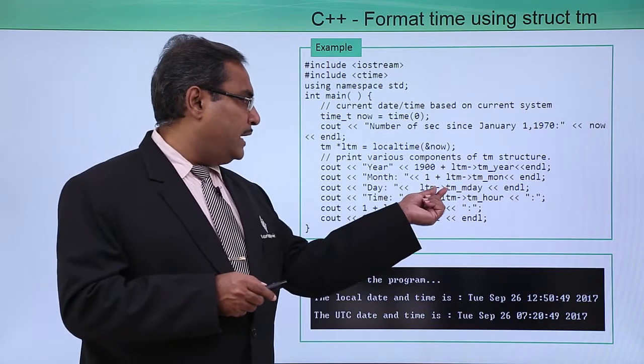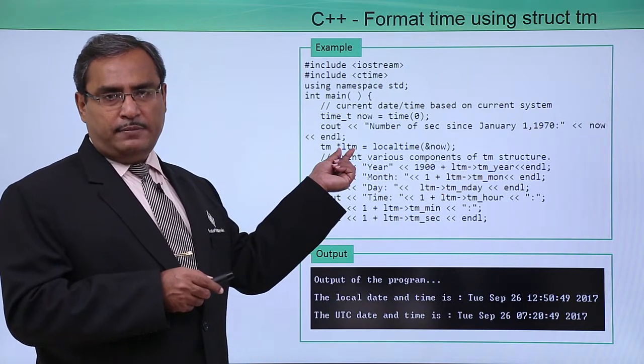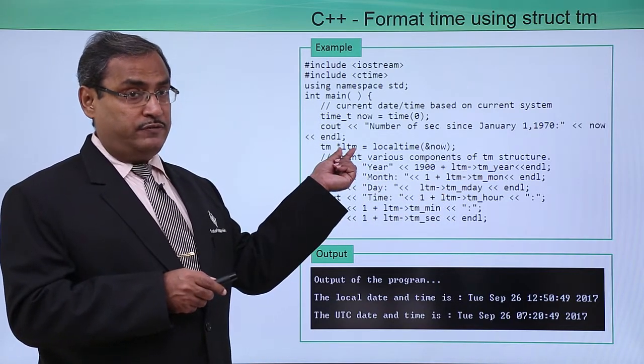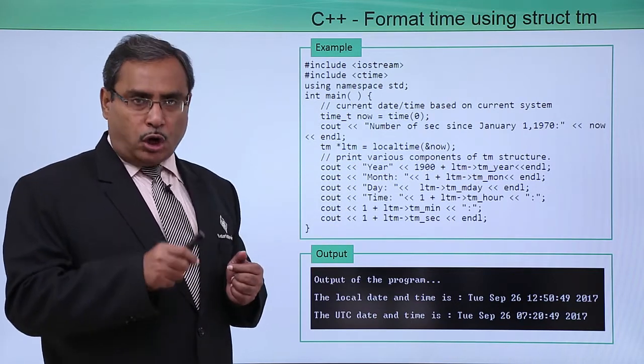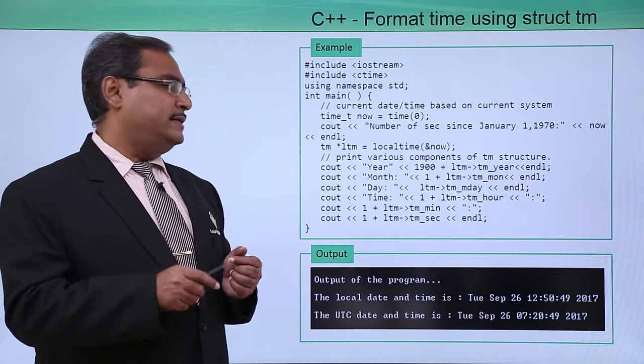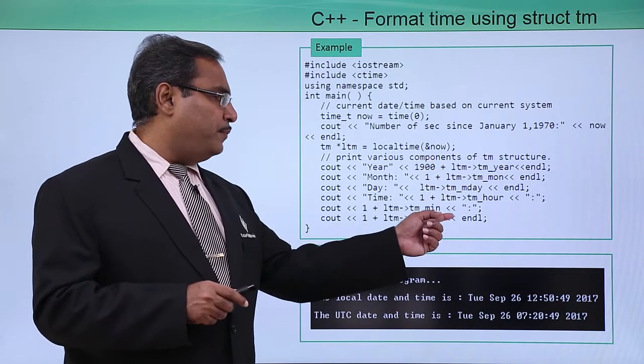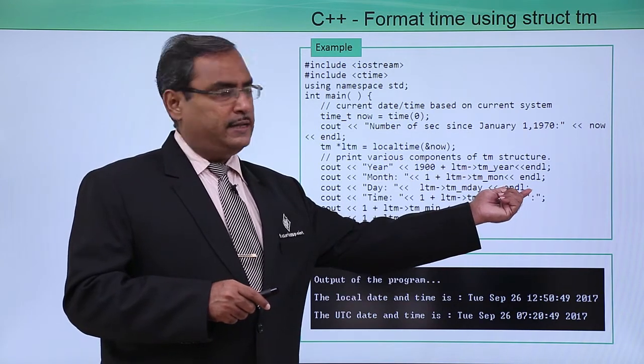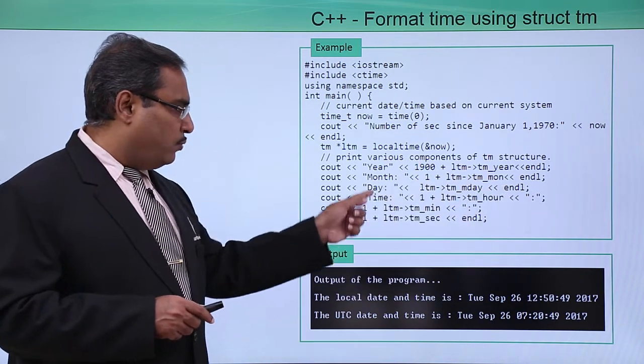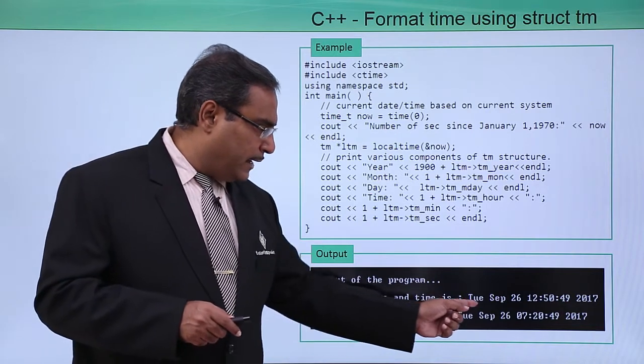Here we are using the arrow operator because LTM is a pointer structure variable. To access its fields you cannot use the dot operator, but you must use the arrow operator. If you print all of them with newlines, the outputs will come like this.